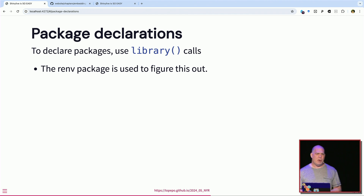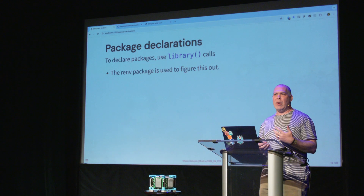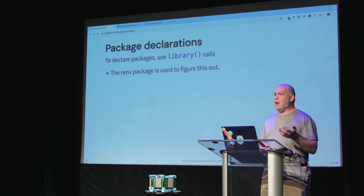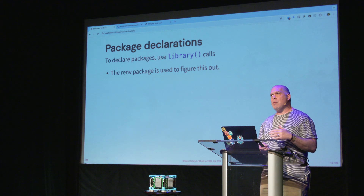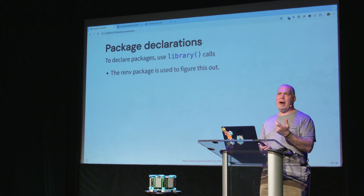For declaring packages — like in the UMAP example, I have ggplot, a color palette package, and dplyr — Shiny Live and WebR need to know what you need so it can go fetch them. It uses renv: you just say `library(dplyr)` and it knows to go get it. If you have packages you want available but won't directly attach — calling them by namespace — you can declare them as a library call, comment that out, and renv will pick it up.